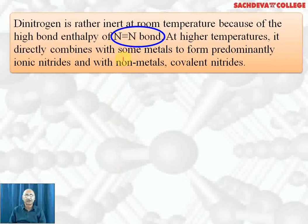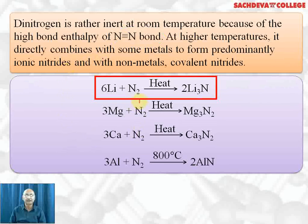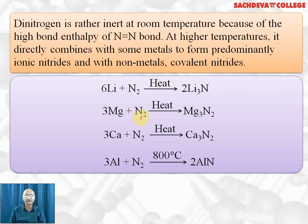Dinitrogen is inert at room temperature due to the presence of the nitrogen triple bond, which has high bond dissociation energy. But at high temperature, it directly combines with some metals to form ionic nitrides and with non-metals to form covalent nitrides. Lithium reacts with nitrogen to form lithium nitride.